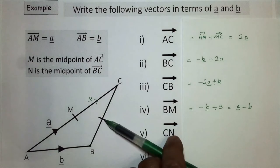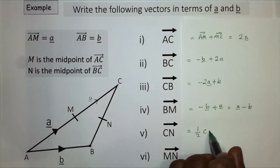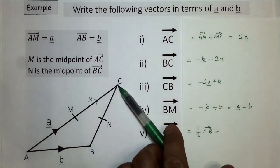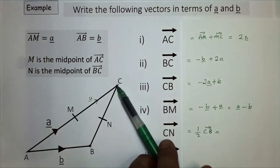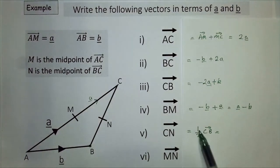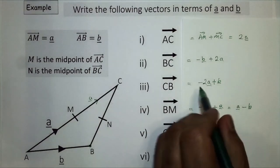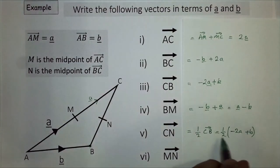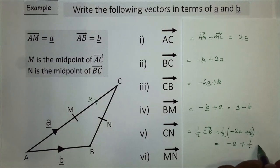For C to N: since N is the midpoint of BC, C to N will be half of CB. So it's half of CB, and we worked out CB was minus 2a plus b. Expanding the bracket: half of minus 2a is minus a, plus half of vector b. So C to N equals minus a plus ½b.